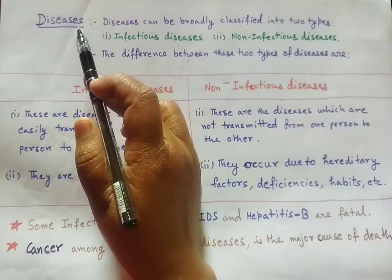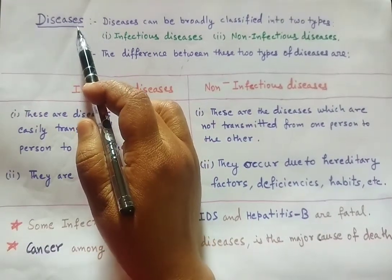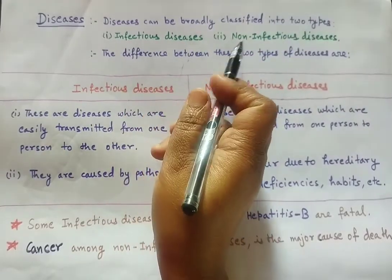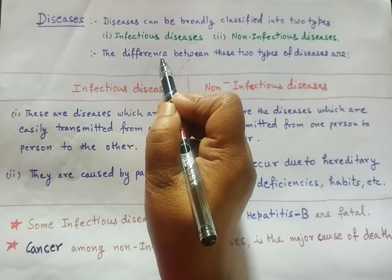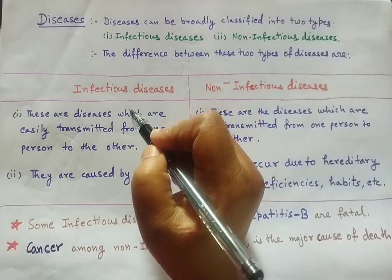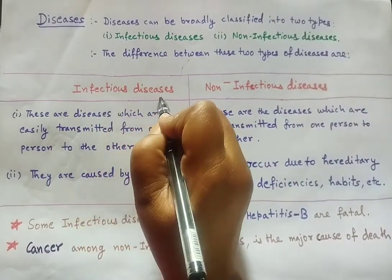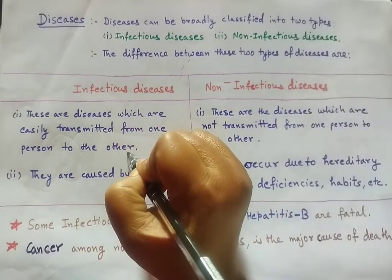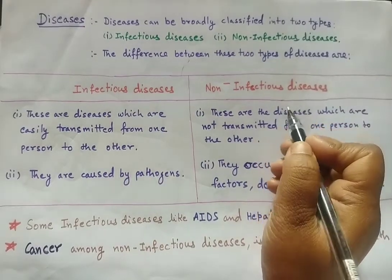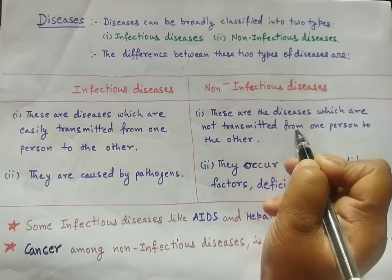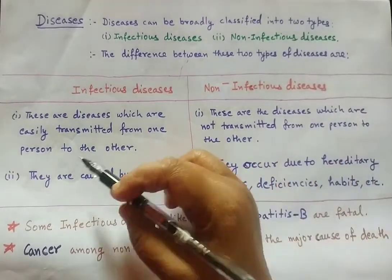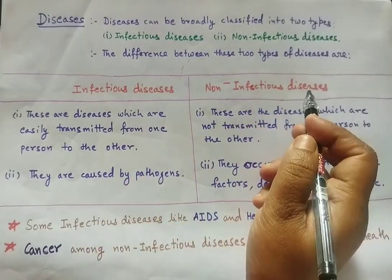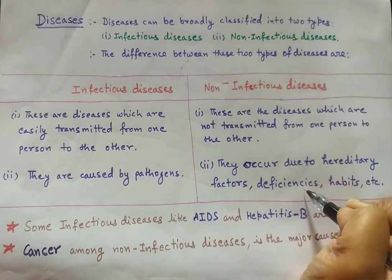Diseases can be broadly classified into two types: infectious diseases and non-infectious diseases. Infectious diseases are easily transmitted from one person to another, whereas non-infectious diseases are not transmitted between persons. Infectious diseases are caused by pathogens, while non-infectious diseases occur due to hereditary factors, deficiencies, and habits.